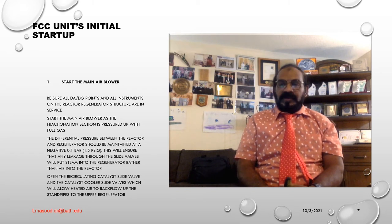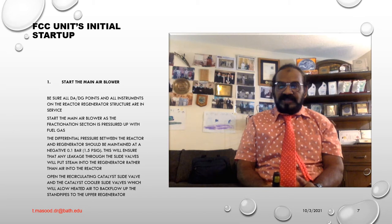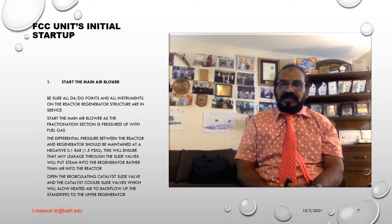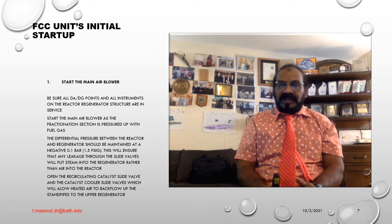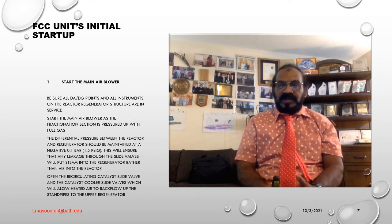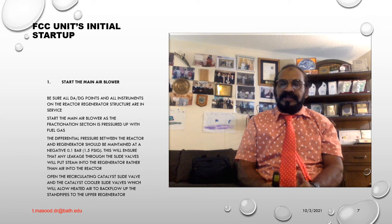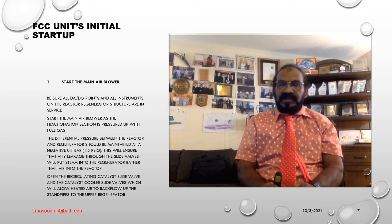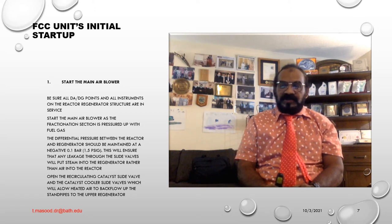Start the Main Air Blower. Number 1, be sure all drain and drain-gauge points and instruments on the Reactor Regenerator structures are in service. Number 2, start the Main Air Blower as the fractionation section is pressurized up with fuel gas. Refer to the Manufacturing Instructions manual for the Main Air Blower startup procedure. Number 3, differential pressure between the Reactor and Regenerator should be maintained at negative 0.1 bar G, that is 1.5 PSIG. This will ensure that any leakage at the slide valve will put steam into the Regenerator rather than air into the Reactor. Note: the steam in the risers and stripper acts as a buffer between the Regenerator containing air and the main column which contains some fuel gas. The steam from the reactor bottom of the main column and the stripper will carry the fuel gas upward into the overhead system, so there will not normally be any fuel gas in the lower part of the main column.